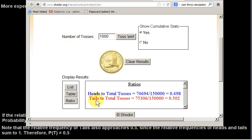We can also see that the relative frequency of tails appears to be approaching 0.5. The relative frequency of heads plus the relative frequency of tails is equal to 1.